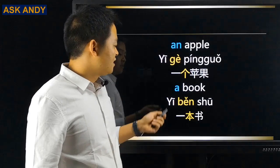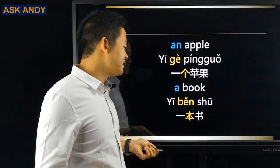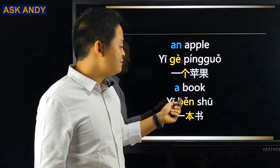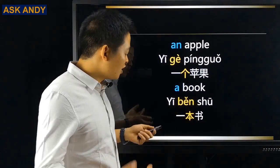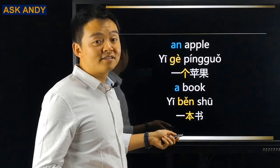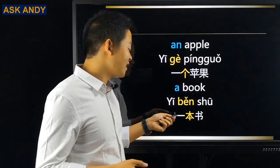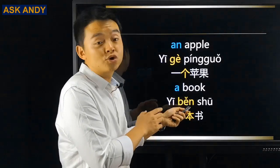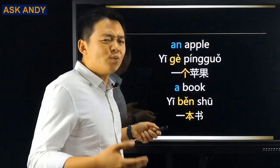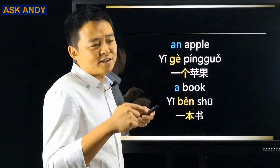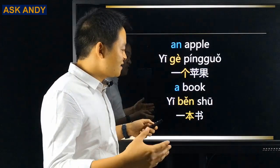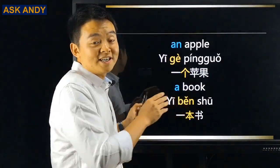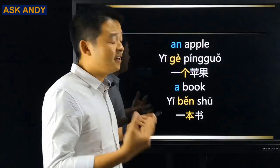For 'a book,' in Chinese it is 一本书. What is this 本? That is the measure word for book, for 书. That's the tricky part — there are some more measure words in Chinese which we don't have in English.